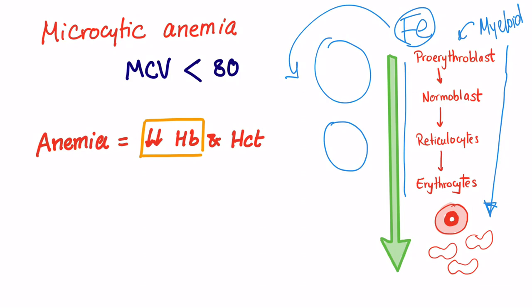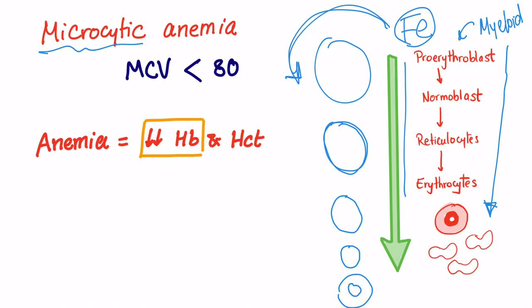As the cells decrease in size, they are waiting for the iron to come. But if iron is deficient and the iron never comes, we end up with a cell smaller than normal — i.e., microcytic anemia. The cell is still waiting for the iron.